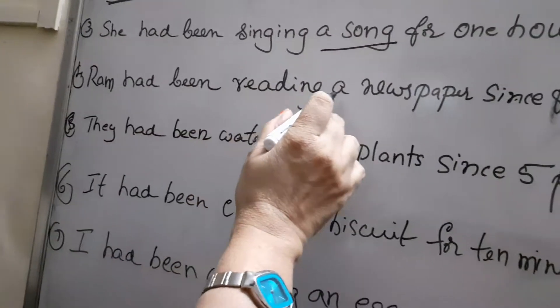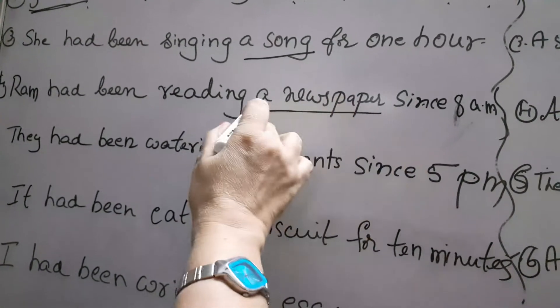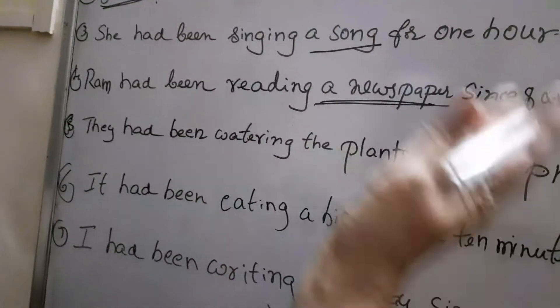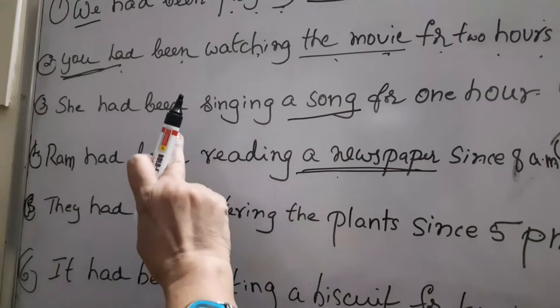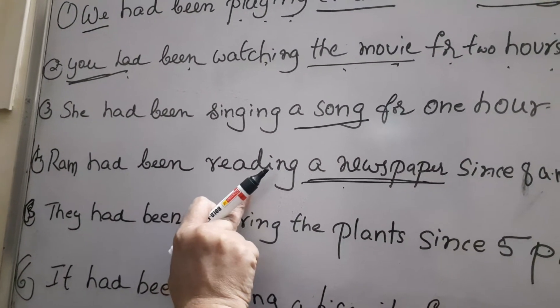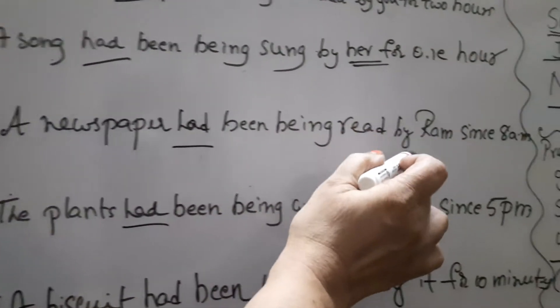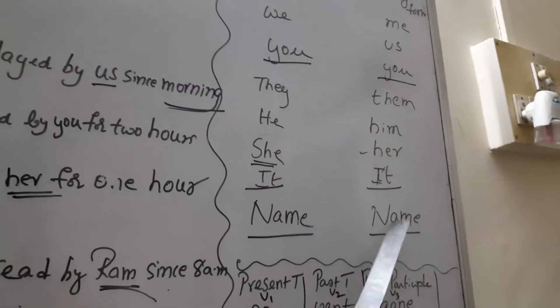Ram had been reading a newspaper since 8 am. Object is 'a newspaper.' A newspaper had been being read by Ram since 8 am. Notice: a name stays the same — Ram remains Ram; it won't change.